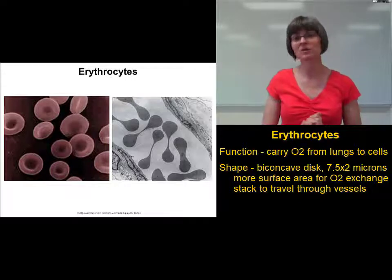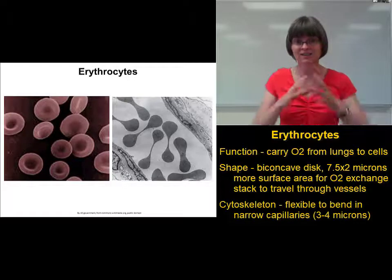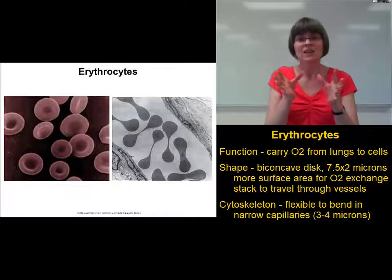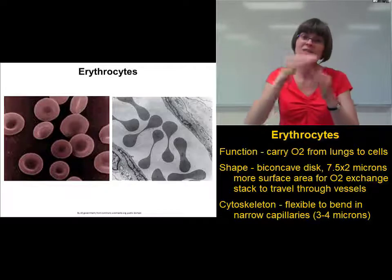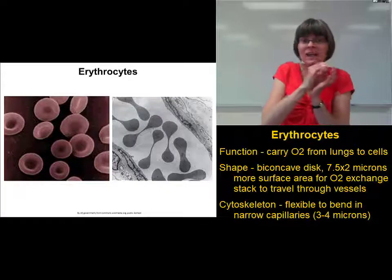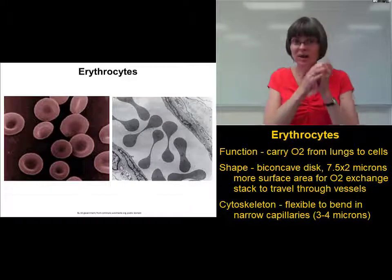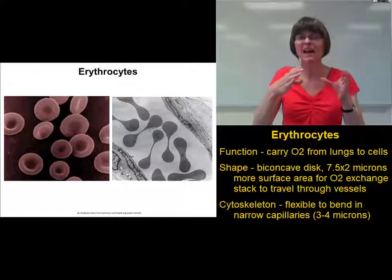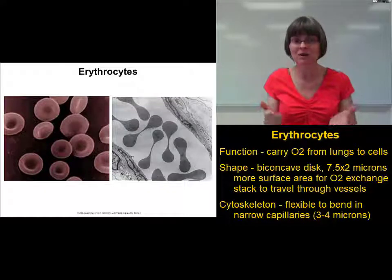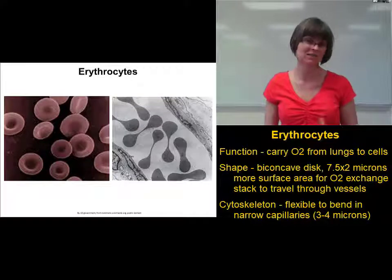Something else important about erythrocytes is that they have a flexible cytoskeleton. The cytoskeleton is the protein network inside the cell that helps maintain its shape. The cytoskeleton of erythrocytes is flexible — they can bend all the way in half to squeeze through narrow capillaries. An erythrocyte is about seven and a half microns, but your smallest capillaries are only three to four microns in diameter, so those erythrocytes have to fold almost in half to fit through.